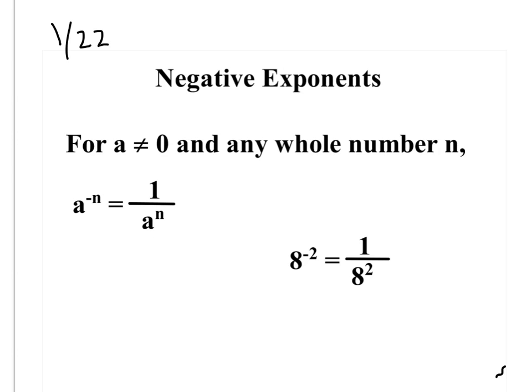What you need to know is this: for when a is not zero and for any whole number n, this works any time a is not zero. A can be anything as long as it's not zero. The reason a cannot be zero is because you can't have zero as a denominator, which will happen. So a cannot be zero.